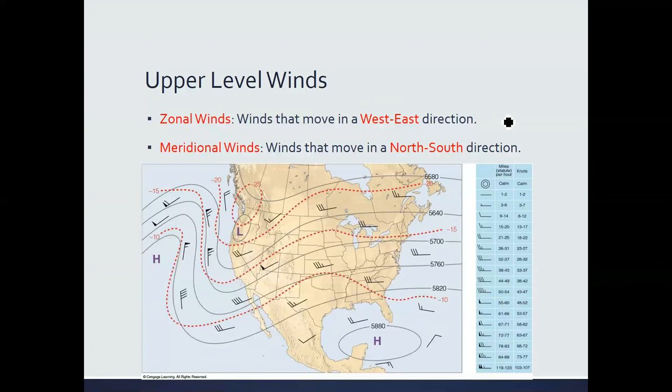Together, the straight-line pattern from geostrophic balance and the curvature from the gradient wind describe upper-level winds. In the upper levels of the atmosphere, there are two types of winds: zonal winds, which travel in a straight east-west direction, and meridional winds, which are based on the north-south direction.